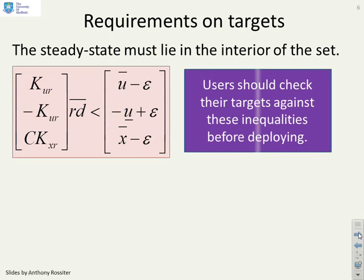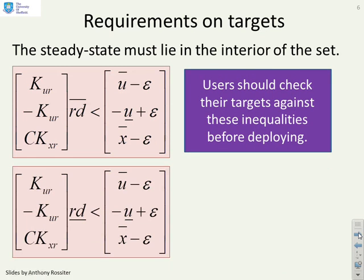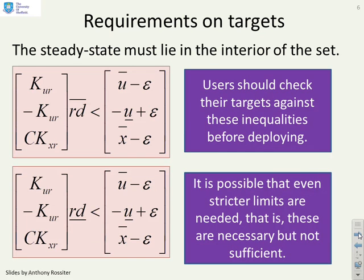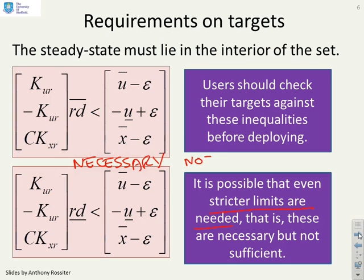Regarding requirements on targets: the steady state has to satisfy certain constraints, because otherwise the steady state is infeasible. In practice you may need even stricter limits than these to ensure feasibility. These conditions are necessary for the MCAS to exist and converge, but they are not sufficient. We won't go into those subtleties as they are beyond the remit of this chapter.